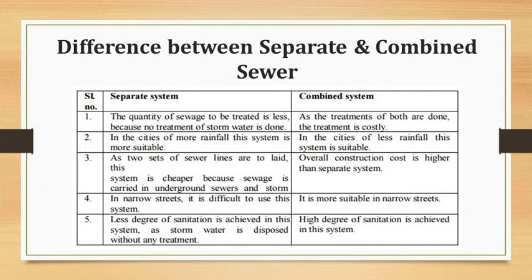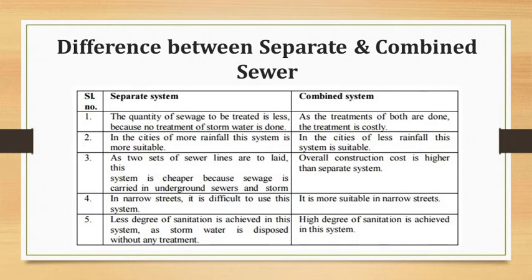Regarding maintenance cost, the separate system has higher maintenance cost because it involves two sets of systems. The combined system has lower maintenance cost. Regarding construction cost in more detail, the separate system has less construction cost due to smaller sewer diameters, while the combined system has a very high construction cost because large-dimension sewers must be constructed at sufficient depth to receive the sewage.